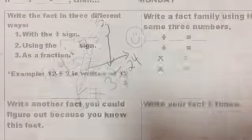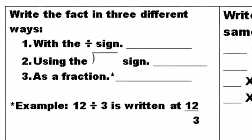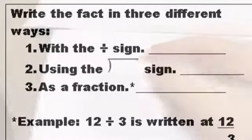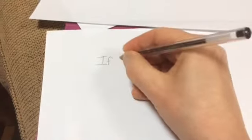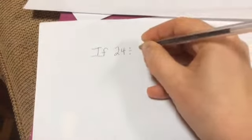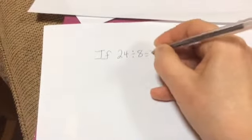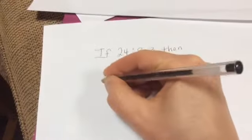Give yourself a smiley face. This is the second page. Write the fact in three different ways. So on the top, that's already filled in for you. If 24, stick the number in, divided by is there. Write 8 equals 3. Then here are three different ways to show it.